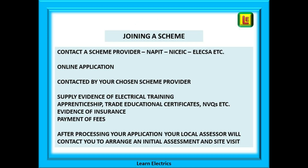Let's move on to how you join a scheme. The first thing to do is contact a scheme provider. You may have a preferred organization, or friends in the trade who recommend their scheme provider. Whatever your choice, a quick Google search will reveal their most up-to-date contact number. An online application is quick and easy and gets the ball rolling straight away. A few days later you will be contacted by the office to discuss your application.